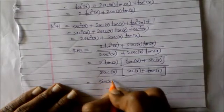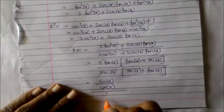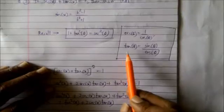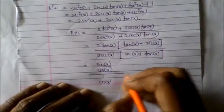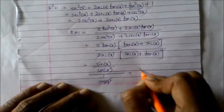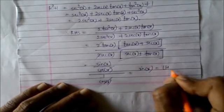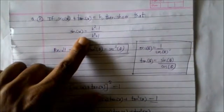Now tan x is sin x upon cos x, and sec x is 1 upon cos x. So tan x upon sec x equals (sin x / cos x) divided by (1 / cos x). The cos x cancels, and I am left with sin x, which is my left hand side. Hence we have shown that sin x = (k² − 1)/(k² + 1).